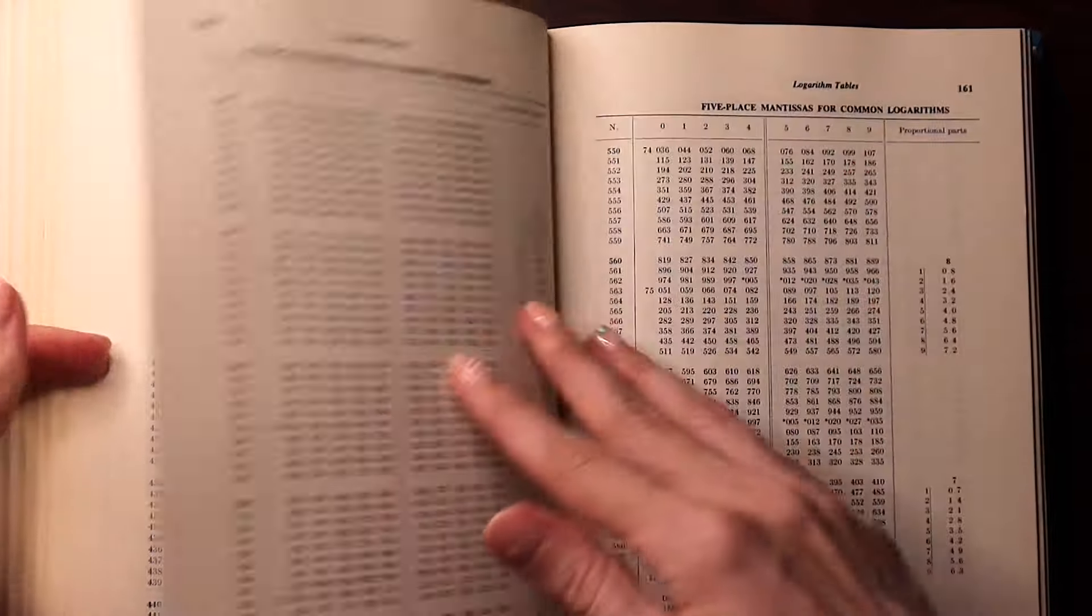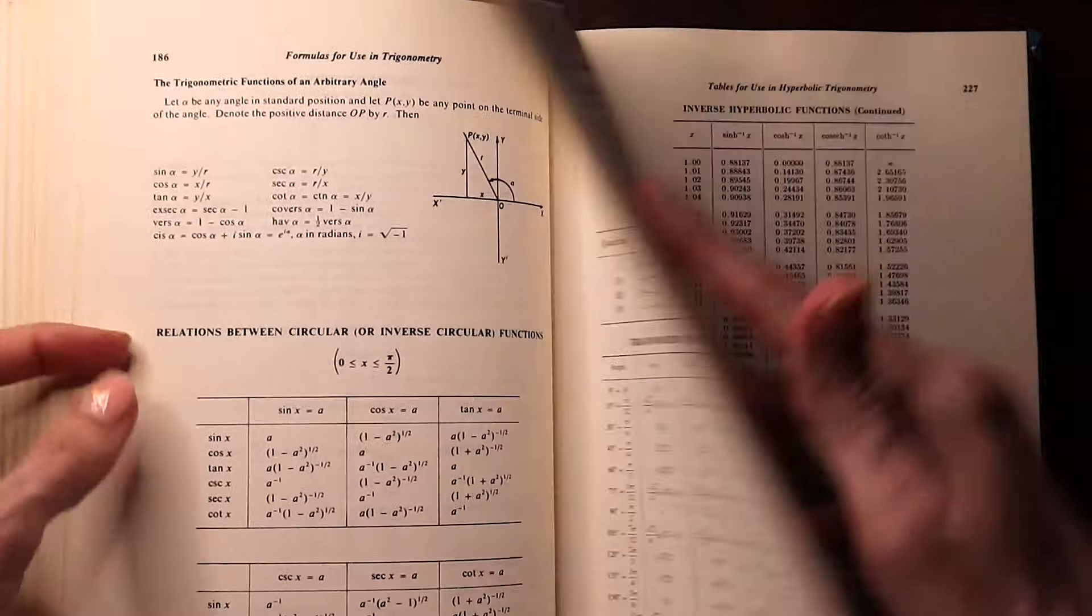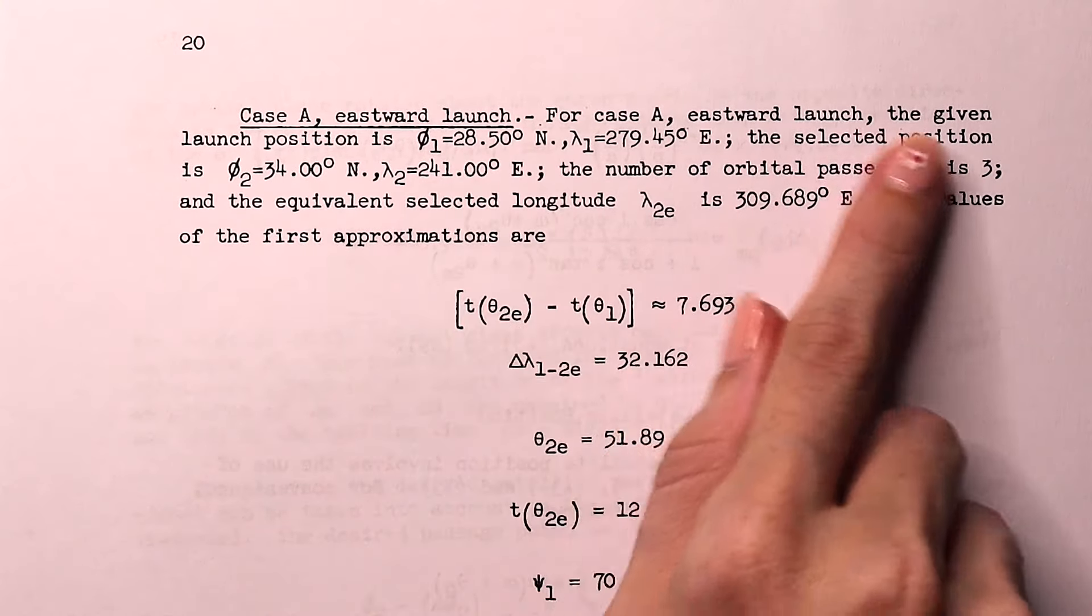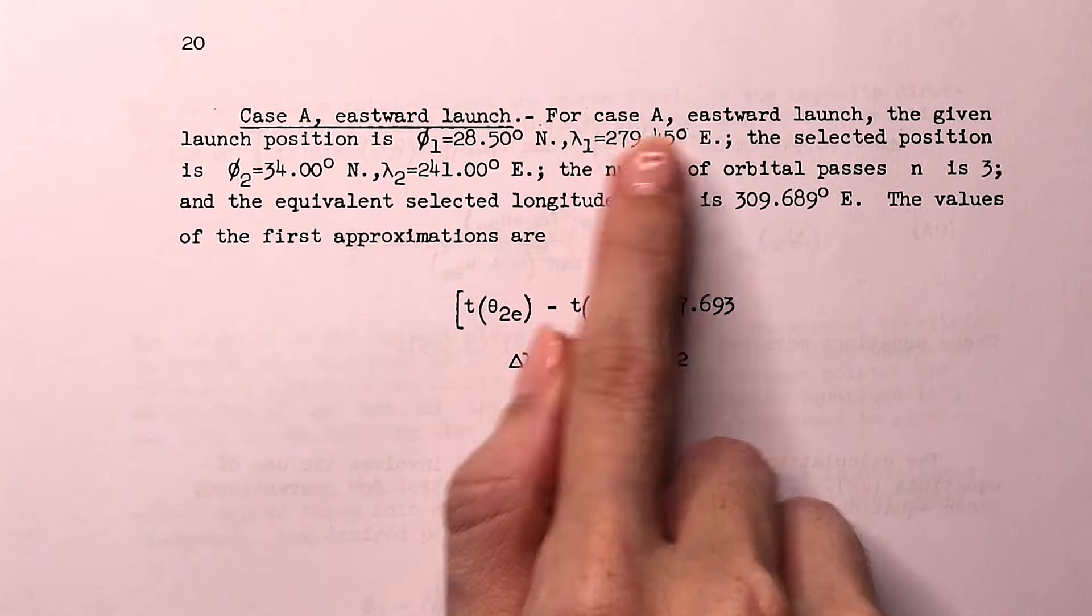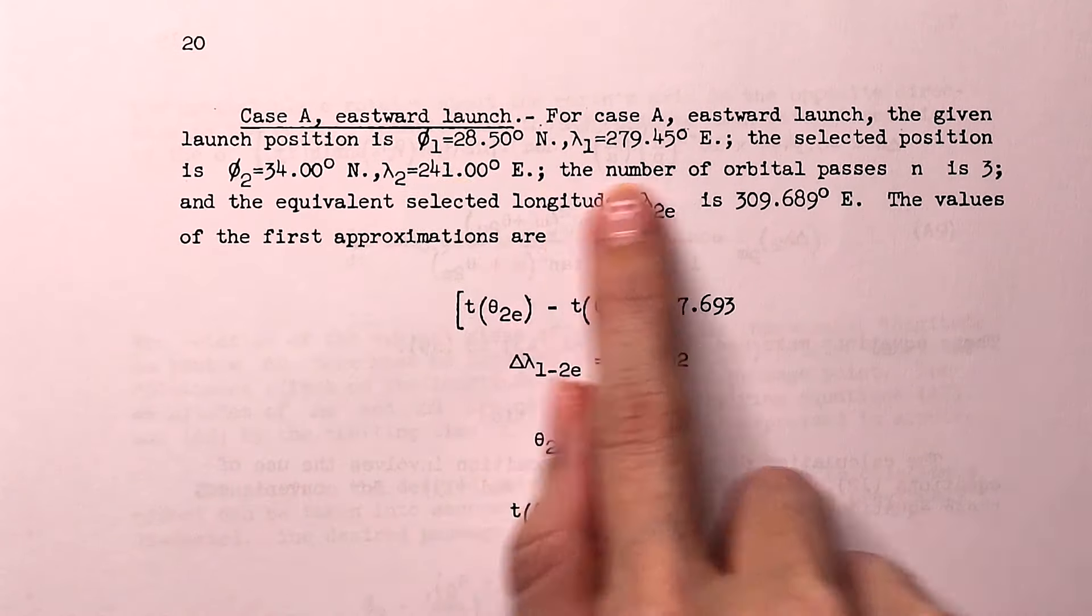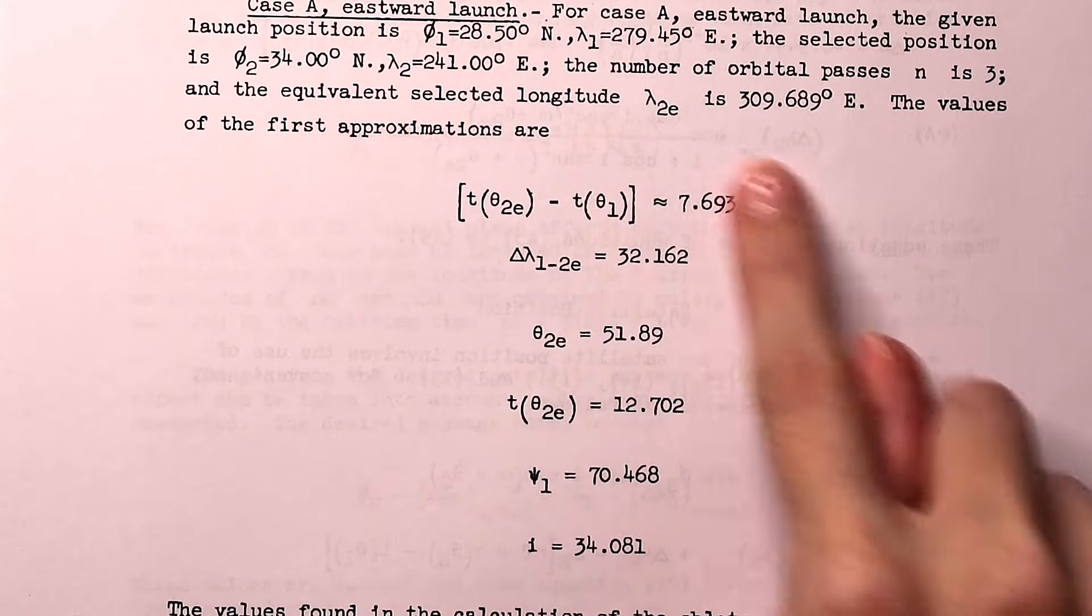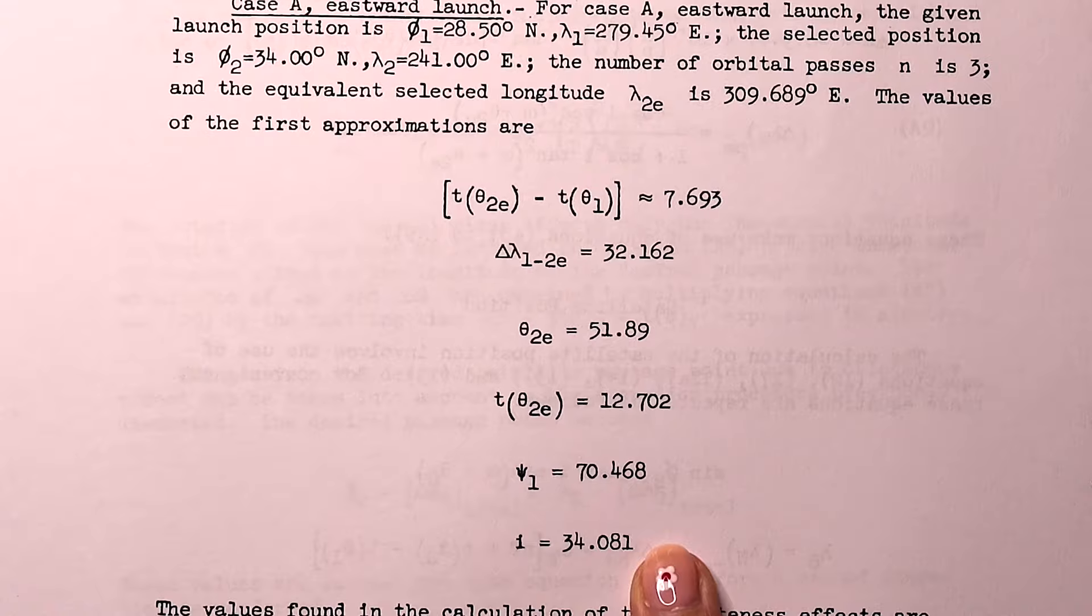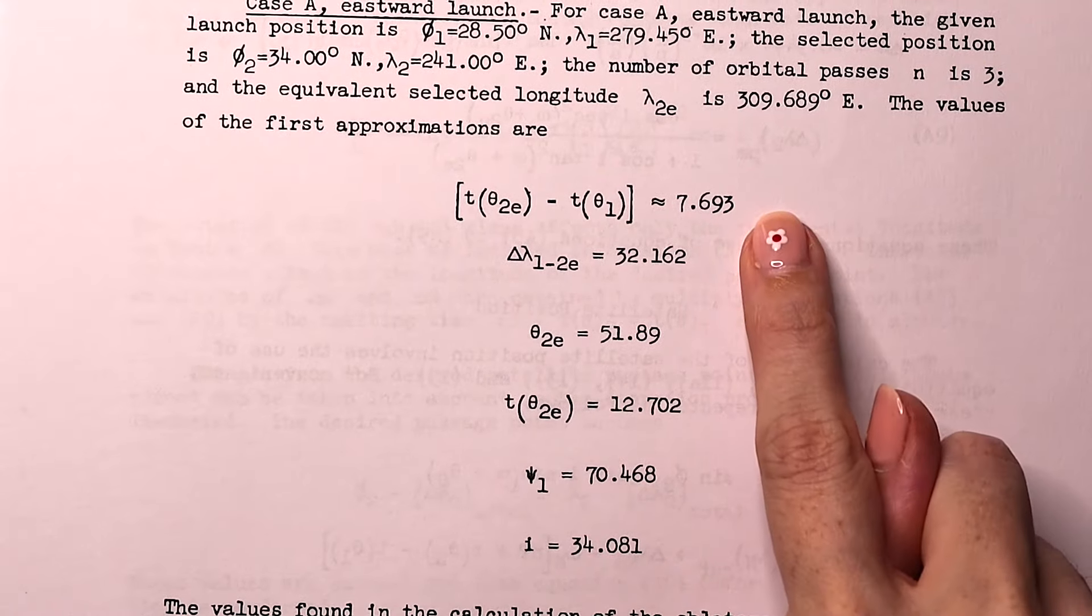For the first example, the eastward launch, we have a given launch position and also a selected re-entry position, and we're going to do three orbits. These are the values that Katherine worked out using those equations on the previous page and using her first approximation.